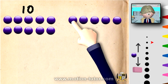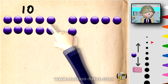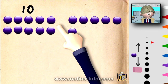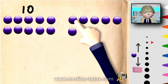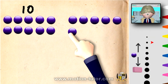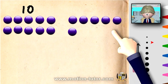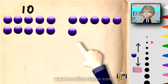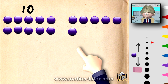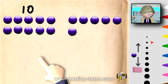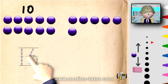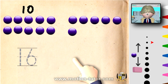Now we'll continue on and say what is ten and six more. Because this is one, two, three, four, five, six — so ten and six more. And what is that? Well, ten and six more is the number sixteen.